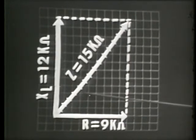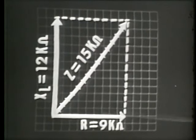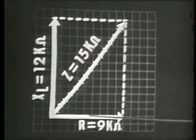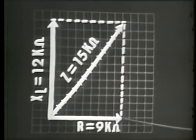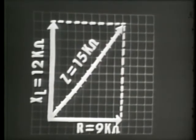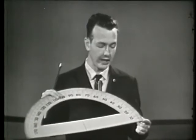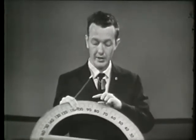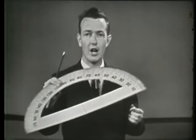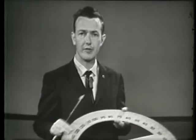You'll notice an angle is generated between the impedance and the resistance vectors. This angle is known as the impedance angle. The impedance angle in an inductive circuit is positive, which tells us the impedance vector lies in a counterclockwise or positive direction from the resistance vector. Using a protractor, we could measure the degrees in that impedance angle. For an inductive circuit, the impedance angle will be somewhere between zero and 90 degrees — in our case, approximately positive 53 degrees.